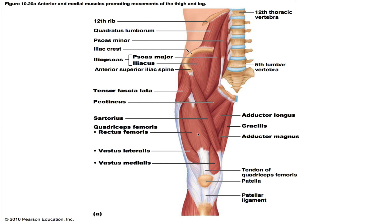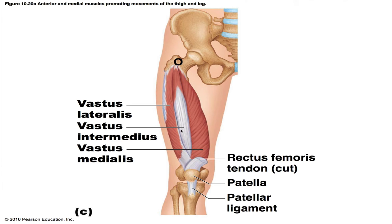The vastus medialis forms the inferomedial aspect of the thigh. Its origin is the linea aspera, the intertrochanric line, and the medial supracondylar lines. Its insertion is the patella and tibial tuberosity via the patellar ligament, and its prime action is to extend the knee, innervated by the femoral nerve. The vastus intermedius lies deep to the rectus femoris, between the vastus lateralis and vastus medialis on the anterior thigh. Its origin is the anterior and lateral surface of the proximal femur shaft; its insertion is also the patella and tibial tuberosity via the patellar ligament. It extends the knee and is also innervated by the femoral nerve.